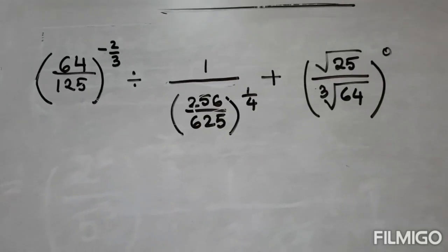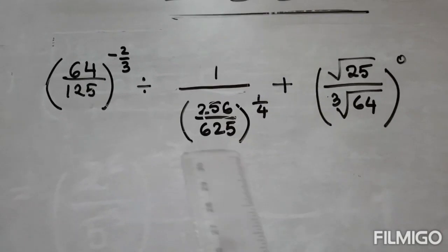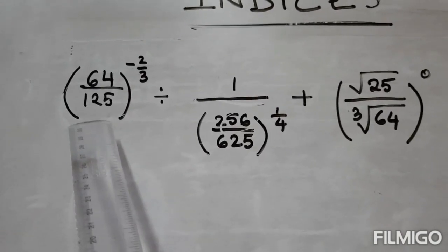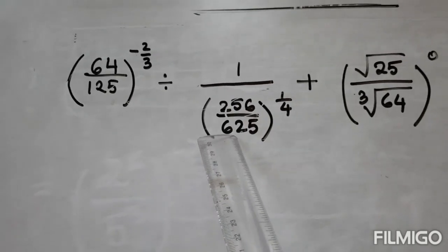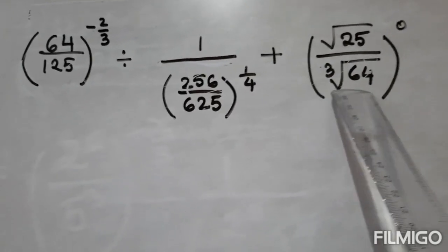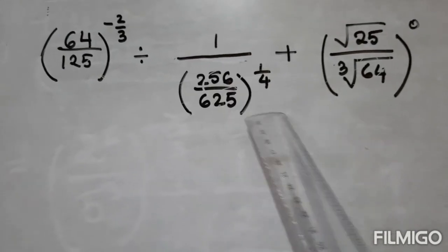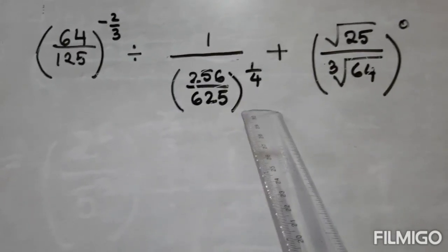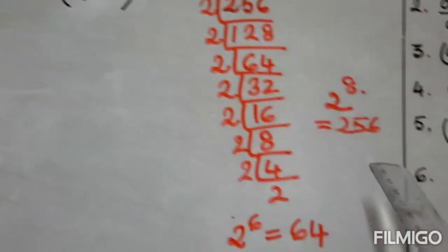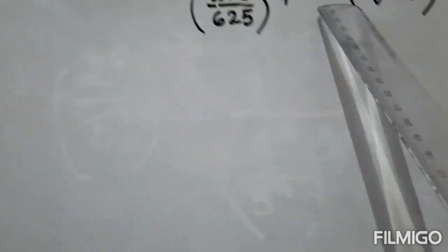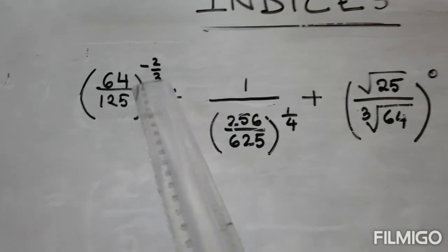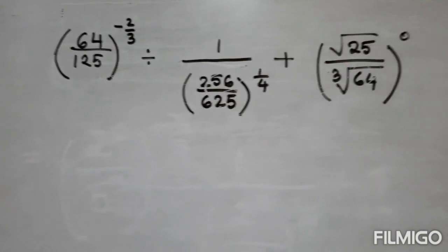Let us start with this sum. We have to simplify this particular sum. In this sum we find numbers 64 by 125 as base, 256 by 625 as base, and we have square root of 25 and cube root of 64 as base. The very first thing we notice is whether there is any zero in the power — we already have one zero in the power. So from the laws, anything to the power 0 is 1, and we are going to put 1 in the next step.